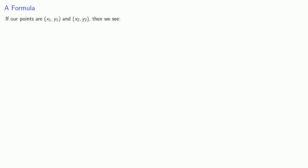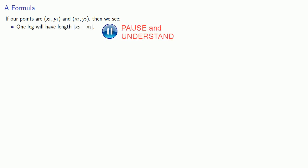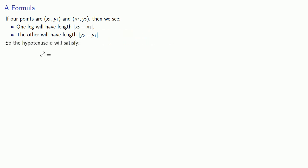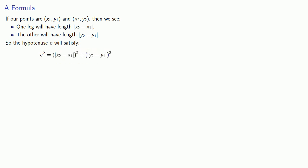We can convert this into a formula. If our points are located at (x₁, y₁) and (x₂, y₂), then one leg of our right triangle will have length equal to the absolute difference between x₂ and x₁, and the other will have length equal to the absolute difference between y₂ and y₁. The hypotenuse C satisfies C squared equals those quantities squared. Since we're squaring the absolute difference, we don't actually need to keep the absolute value symbols. Taking the square root gives us the distance formula.